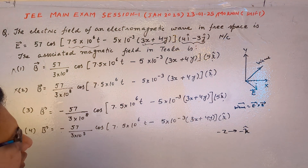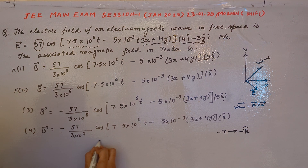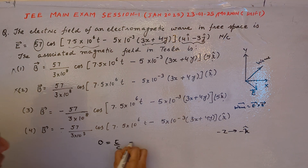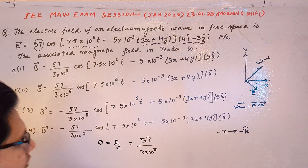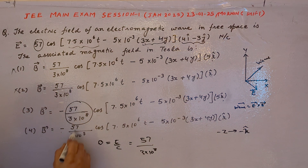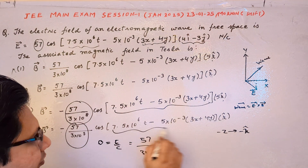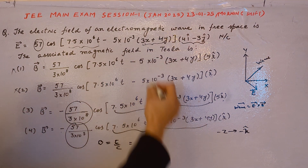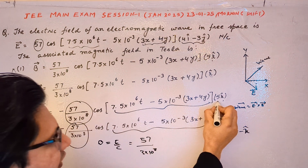Now let us check which is the correct answer. We know the magnitude relationship B equals E upon c. The magnitude of E is 57, and the speed of light c is 3×10⁸, so the magnitude of B is 57/(3×10⁸). This value of 57/(3×10⁸) appears in both remaining options. The bracket term is the same in all four options. But there is a difference: option three has 5k and option four has just k.